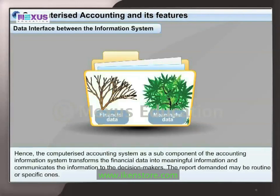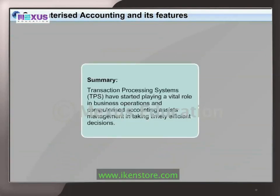The computerized accounting system, as a subcomponent of the Accounting Information System, transforms financial data into meaningful information and communicates it to decision makers. The reports demanded may be routine or specific ones. To summarize: Transaction Processing Systems, or TPS, have started playing a vital role in business operations, and computerized accounting assists management in taking timely and efficient decisions.